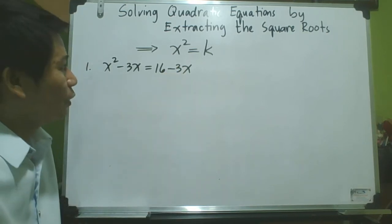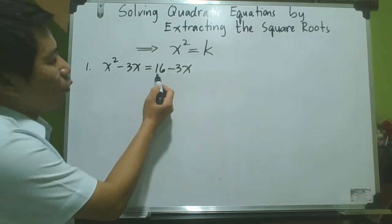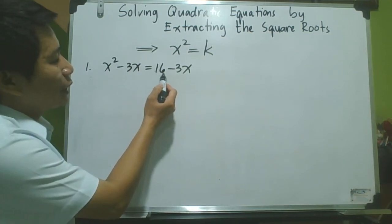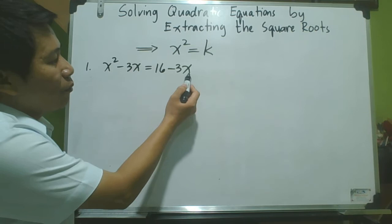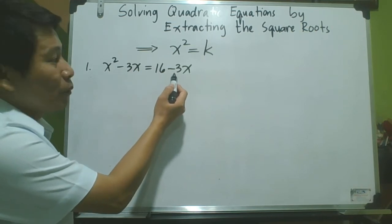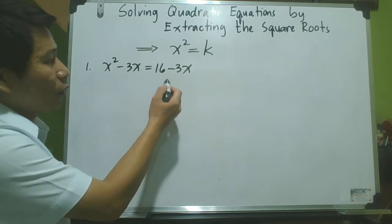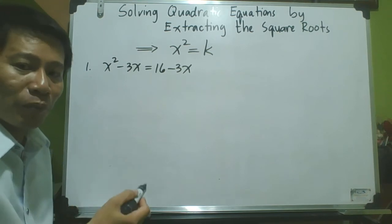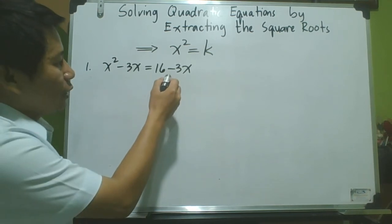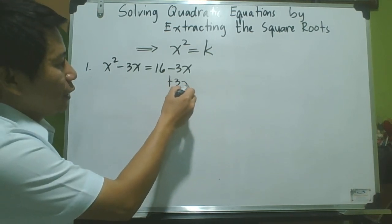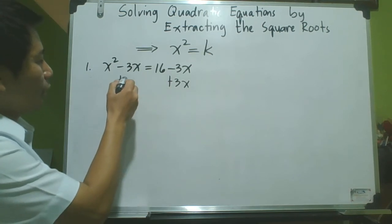Let us see. Observe that we need to isolate the constant term 16, so we need to eliminate negative 3x. To do that, we will apply the addition property of equality — we add 3x to both sides.